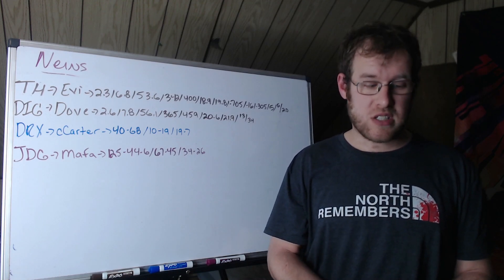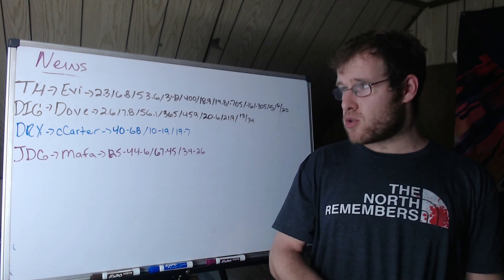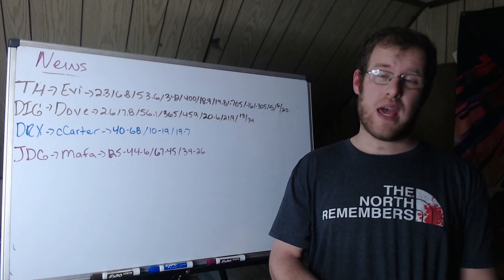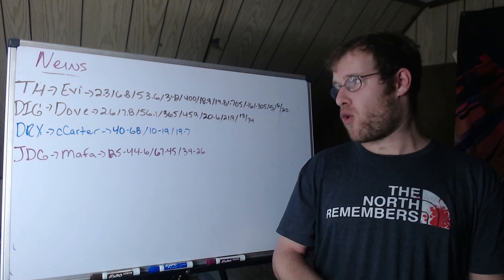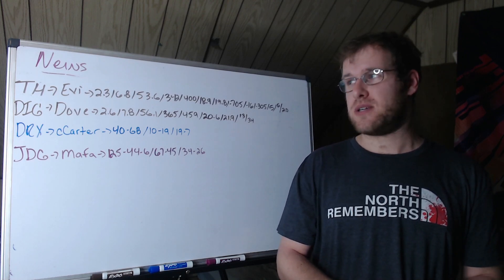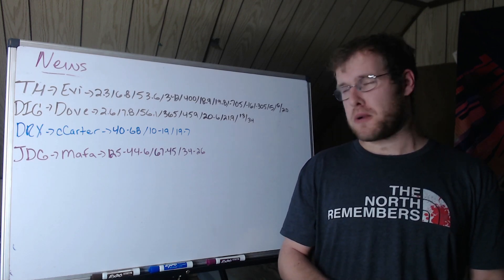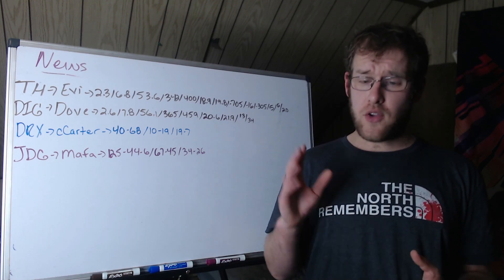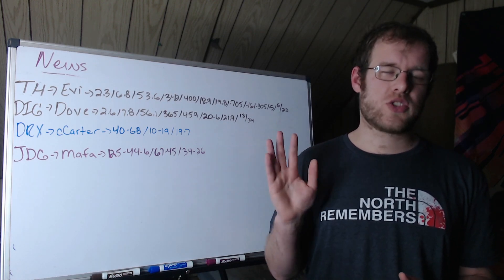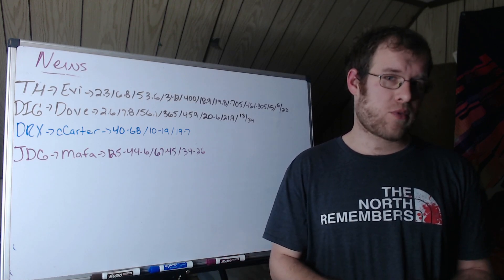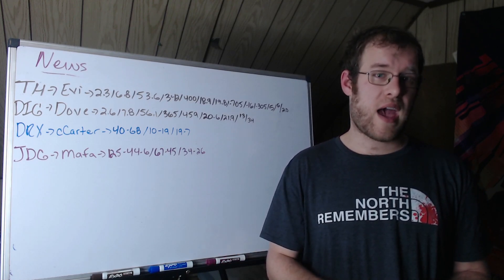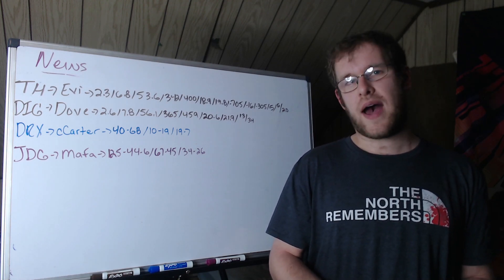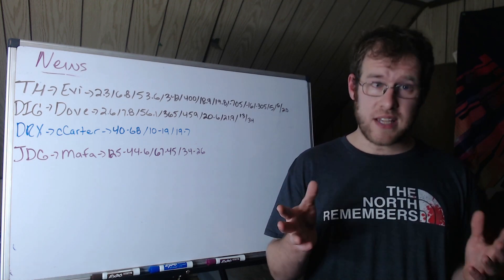2.3 KDA, 6.8 CS per minute, 53.6% kill participation - very bad. 342 gold per minute, about 19% of gold, 400 damage per minute - that's 20% of damage. Someone could say 'oh but he's playing weak side' and don't get me wrong, Vetheo ate a ton of this team's resources in the mid to late game. That's why his CS was so high, that's why his gold per minute is so high in the percentages. So it does eventually even out, but still, in the early game when EviE is in lane he was down on average 705 gold, 16 CS, and 305 XP.